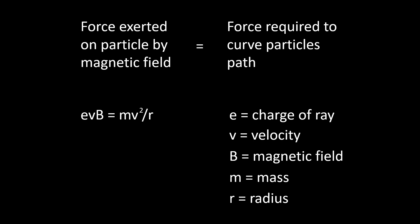Where E is the charge of the ray, V is the velocity, R is radius, M is mass, and B is magnetic field.